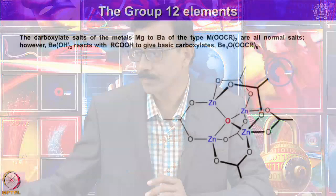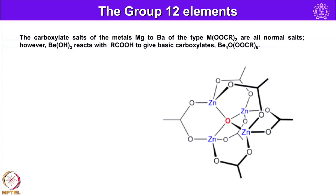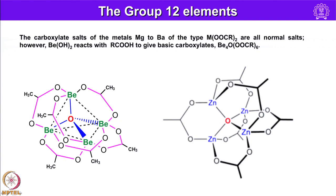Both metals react with acids and alkali, and both form a basic acetate of the type M₄O(acetate)₆. You can see how zinc acetate looks. The carboxylate salts of metals magnesium to barium may have this type of normal salt structure. Beryllium hydroxide also reacts with carboxylic acids such as acetic acid to give basic carboxylates, as discussed while covering Group 2 elements. Zinc basic carboxylate is very similar to beryllium basic carboxylate, featuring one tetra-bridging oxygen and bridging acetates.